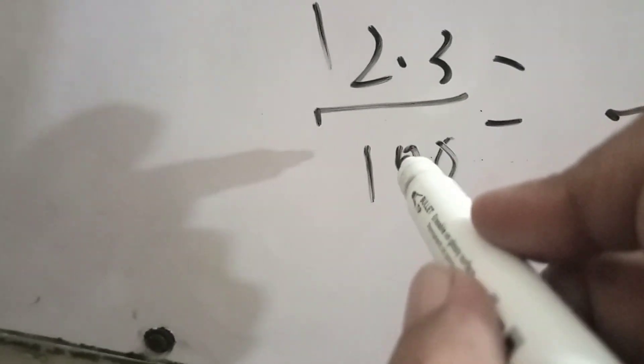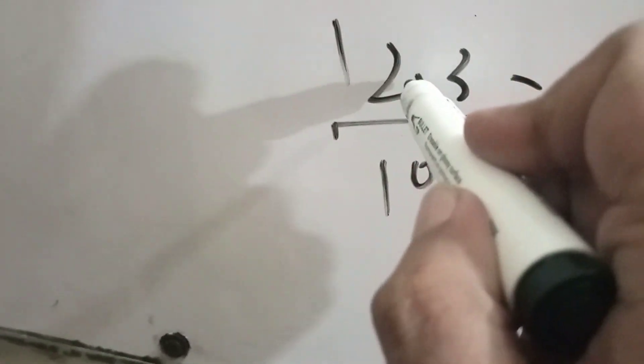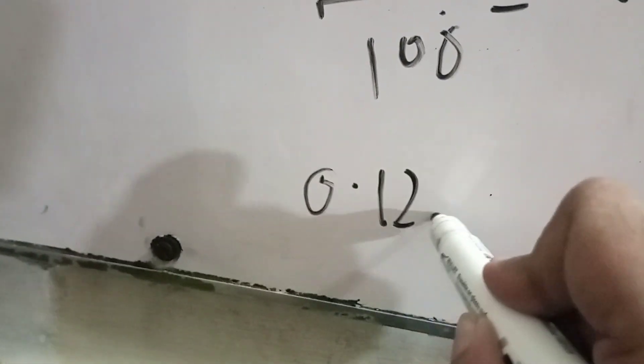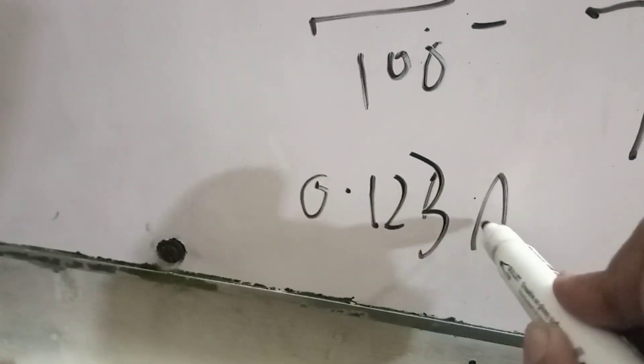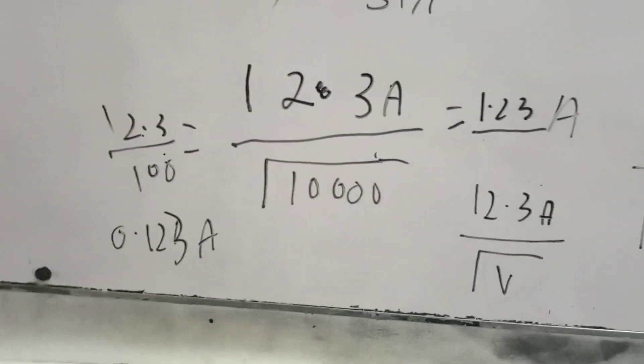When you divide the 12.3, when you divide the two zeros, the decimal will be two. By the way, the other way, the answer is 0.12 Angstrom. You don't have to worry about these things, I will tell you about this.